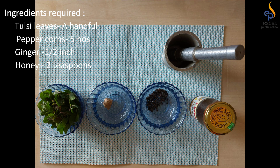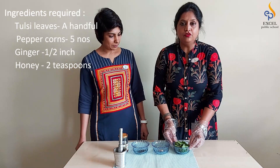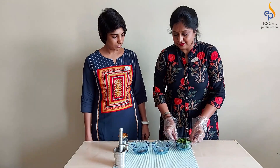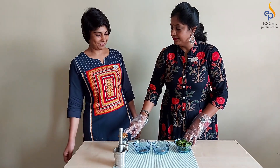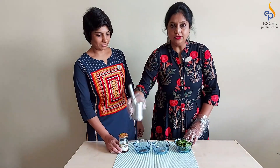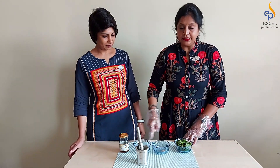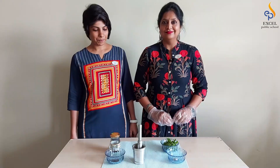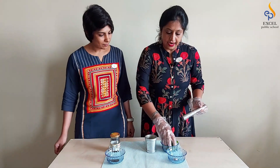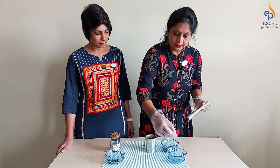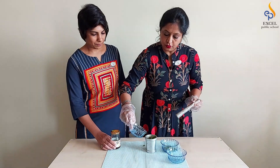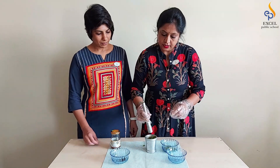The ingredients required are: a handful of washed tulsi leaves, a small piece of washed ginger, a few peppercorns, and two teaspoons of honey. Take a crusher and crush all these ingredients except honey — add tulsi leaves, ginger, and a few peppercorns, and crush it well.